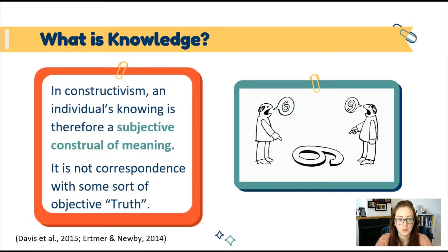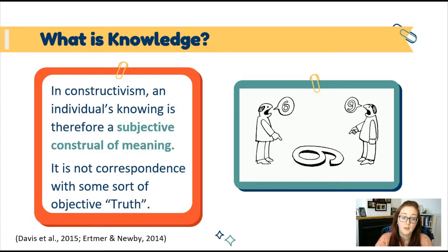So what is knowledge within all of this? In constructivism, an individual's knowing is a subjective construal of meaning — it is about creating meaning rather than acquiring it. Learning and knowing is a matter of what fits with the individual's current physical and social experiences. It's not about correspondence with some kind of objective external truth; it is a coherence theory of learning. We acknowledge that the tapestry of our perceptions may be woven from entirely different experiences, so having identical interpretations isn't what's important — rather, it's whether these different perspectives are compatible.